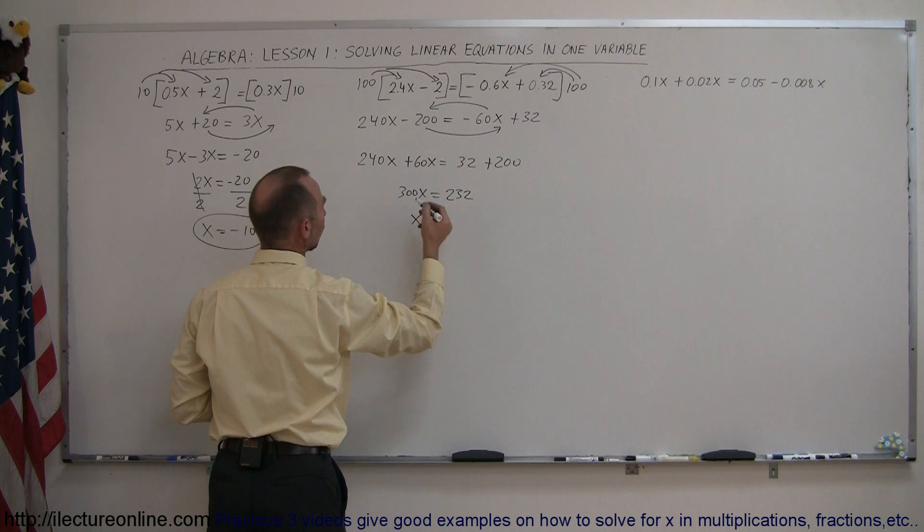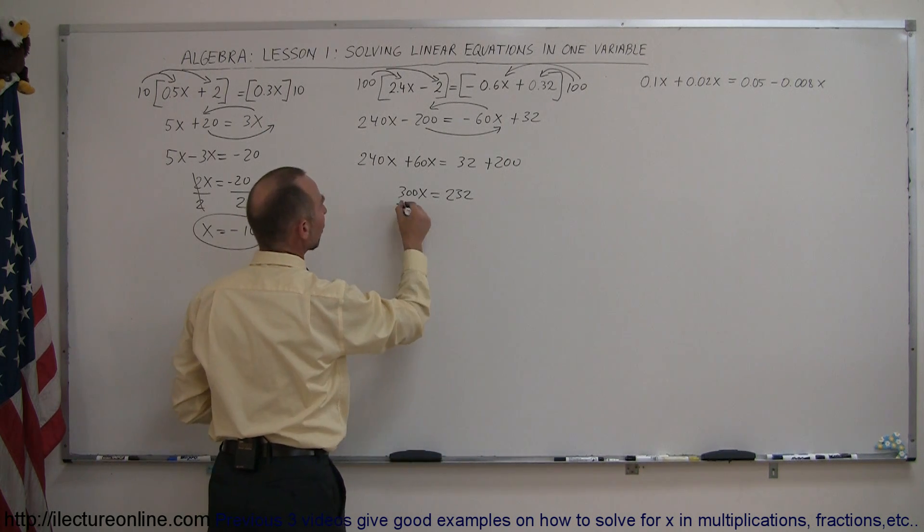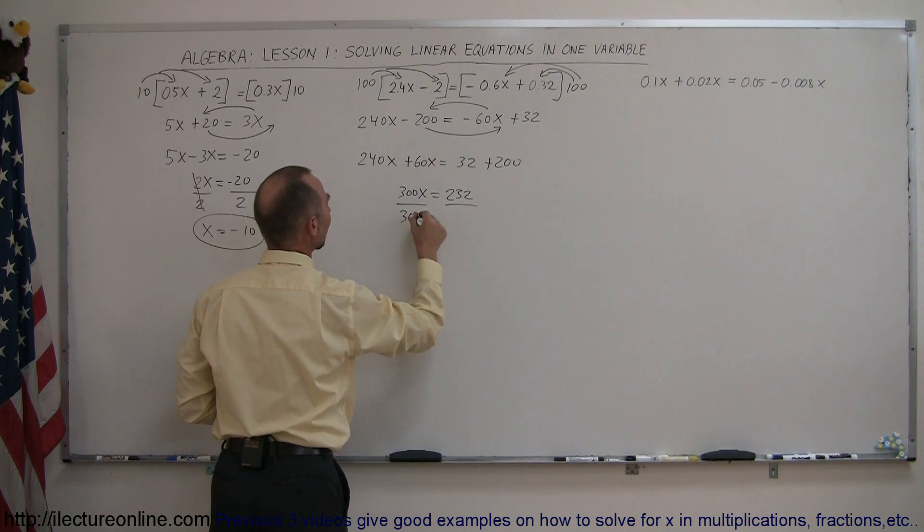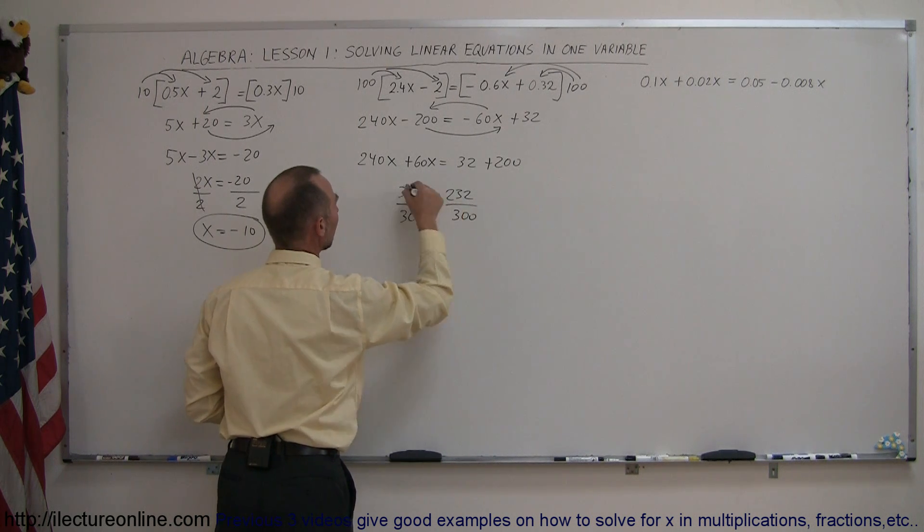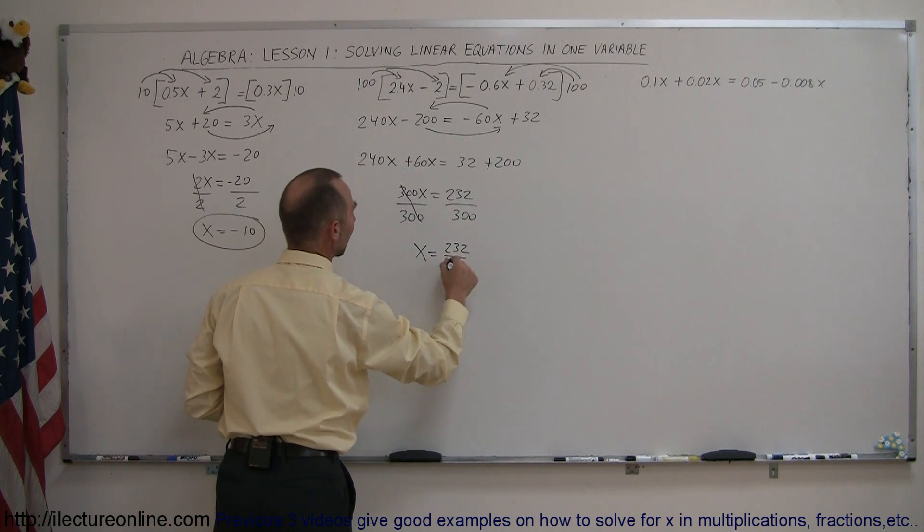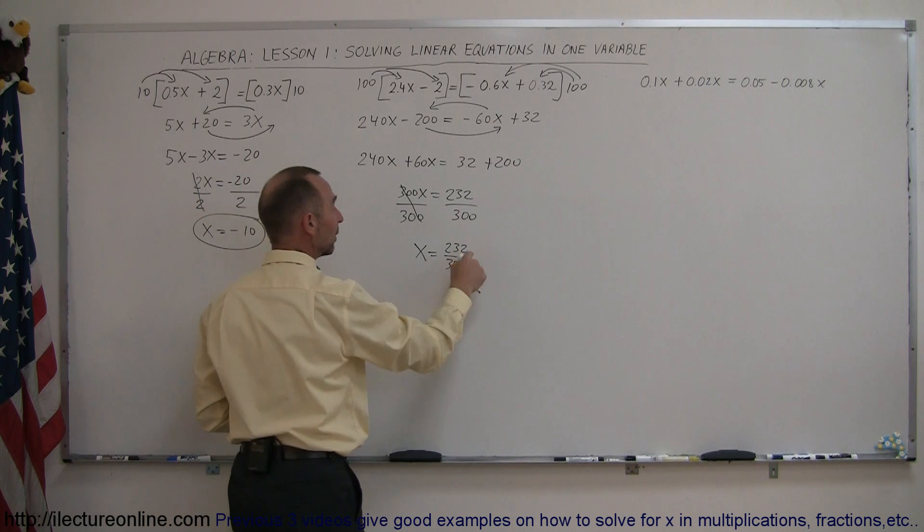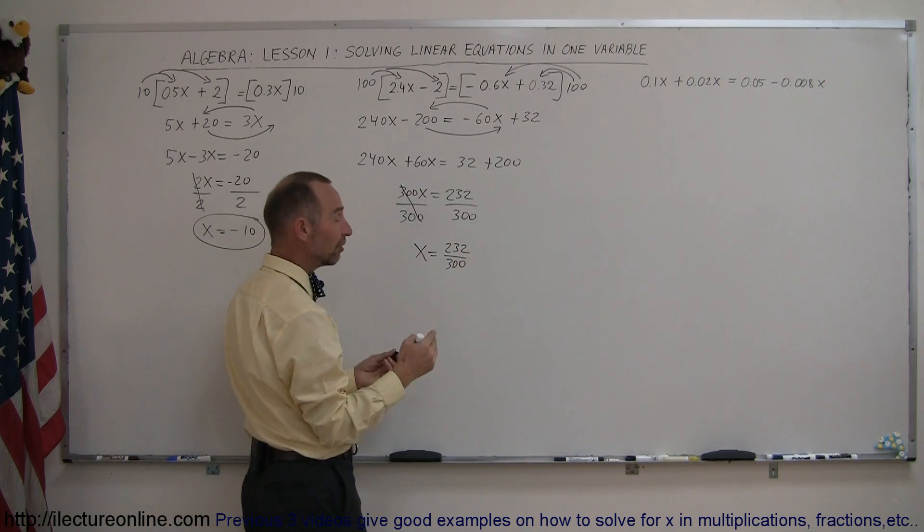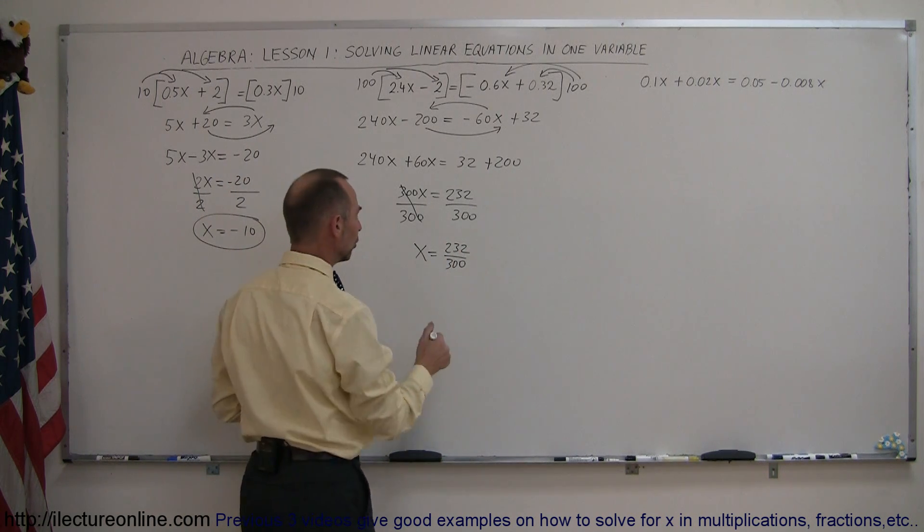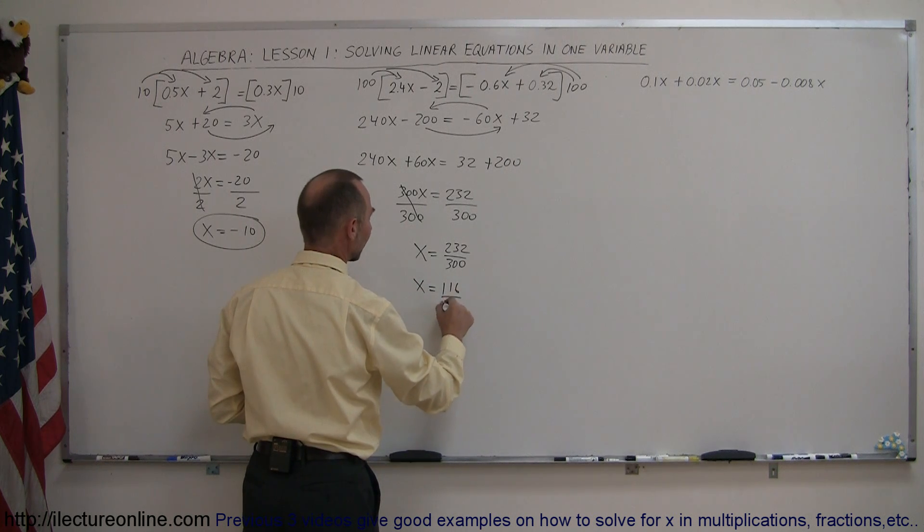This becomes 300x equals 232, and so x is equal to—let me write it out because it's better that way—divide now both sides by the number in front of the x, so divide by 300, this cancels out, so x is equal to 232 divided by 300. Now, we can probably simplify that because both the top and the bottom, the numerator and denominator are even, that means they can be divided by 2, so we can write x is equal to 116 over 150.